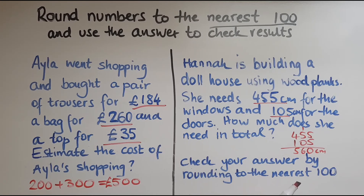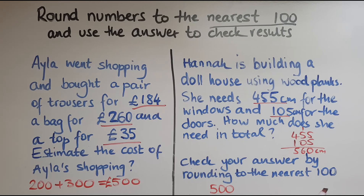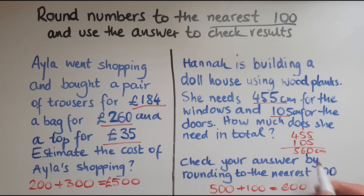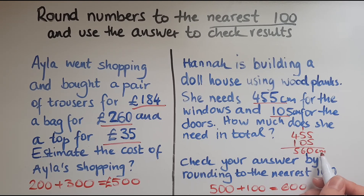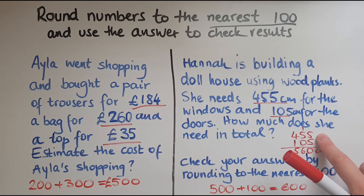Now we've got to check the answer by rounding to the nearest hundred. 455 to the nearest hundred is 500, since it's closer to 500 than 400. 105 to the nearest hundred is 100, because it's just five more than 100. So altogether that gives me 600. Is that close to 560? It is, and in fact if you round 560 to the nearest hundred it gives you 600 — so we've got that calculation right. If the estimate had been very different, I would go back and recheck.